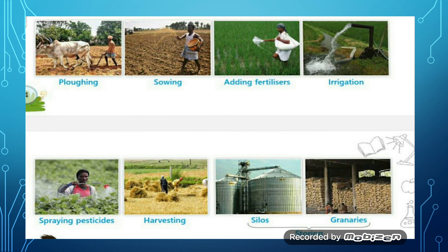Second is sowing. In this stage, seeds are sown in the plowed field. After plowing, farmers sow seeds in the field, and then after that we have the third stage.